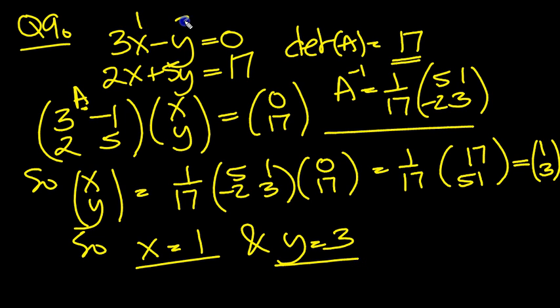So x equals 1 and y equals 3. It should be easy to spot that. Let's verify: 3 times 1 take away 3 is 0, and 2 times 1 plus 5 times 3 is 15, 2 and 15 is 17. Yeah, that's good. Question 9 done.